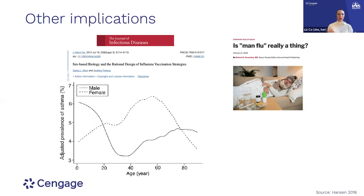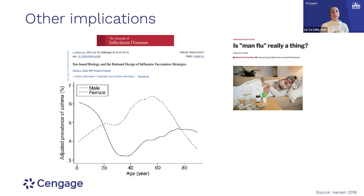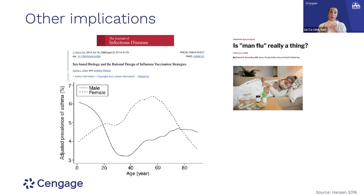One thing we can think about from here is really dialing in the way we run vaccination programs. Looking at the flu vaccine, it turns out that a biological woman — or a person with higher circulating estrogen — can have the same response as a person with higher circulating testosterone with only half the dose of the vaccine. This study was done in influenza vaccines, so theoretically we could deliver less vaccine to individuals with higher estrogen levels and have more vaccine to go around.